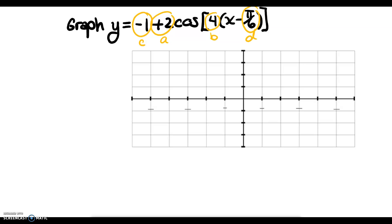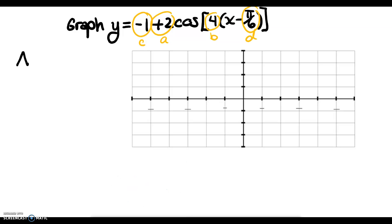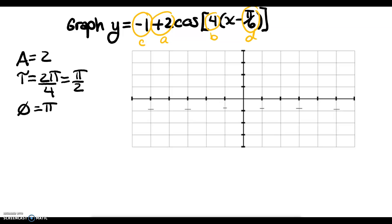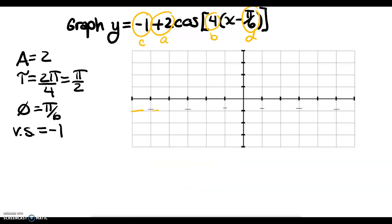I have A, B, C, and D already circled, and B is already factored out. So I'm going to get straight to calculating my amplitude, which is the absolute value of a positive 2, which is 2. My period will be 2 pi over 4, or pi over 2. I have a phase shift of pi over 6. And then I have a vertical shift of negative 1, or down 1. I'll go ahead and pencil in my vertical shift: y equals negative 1.